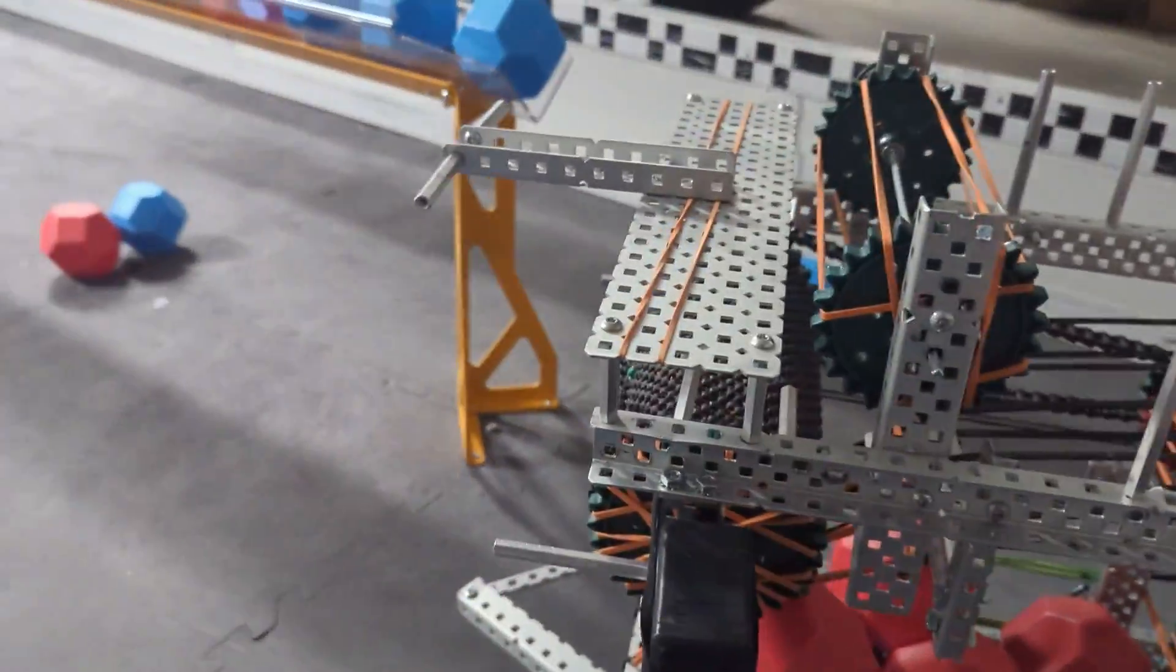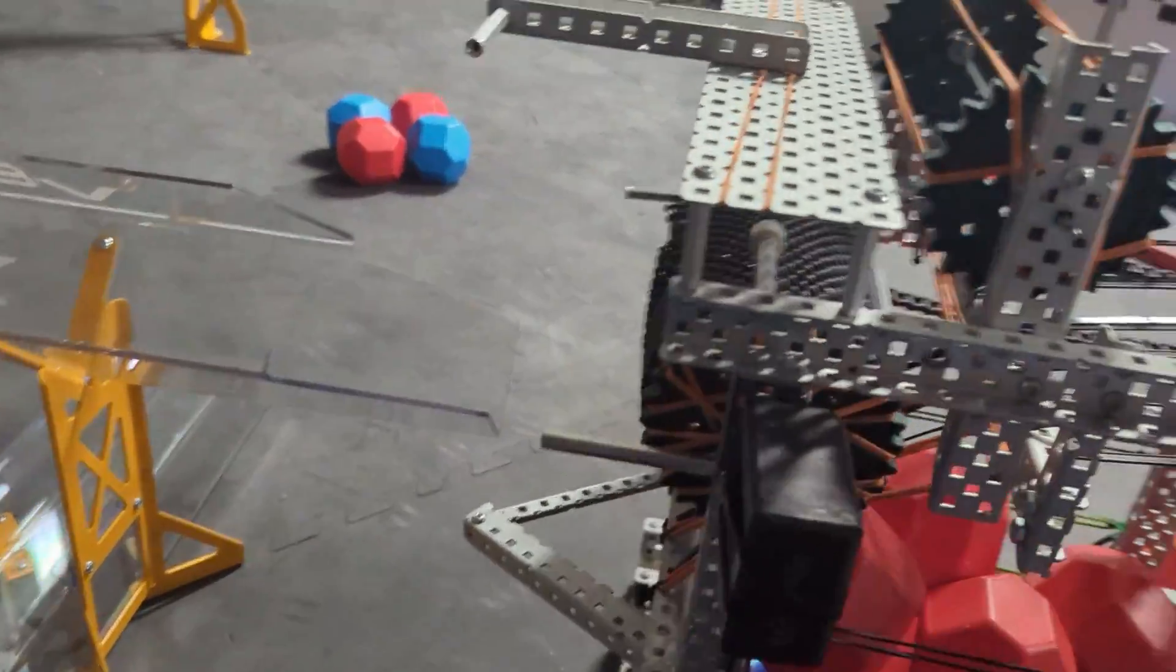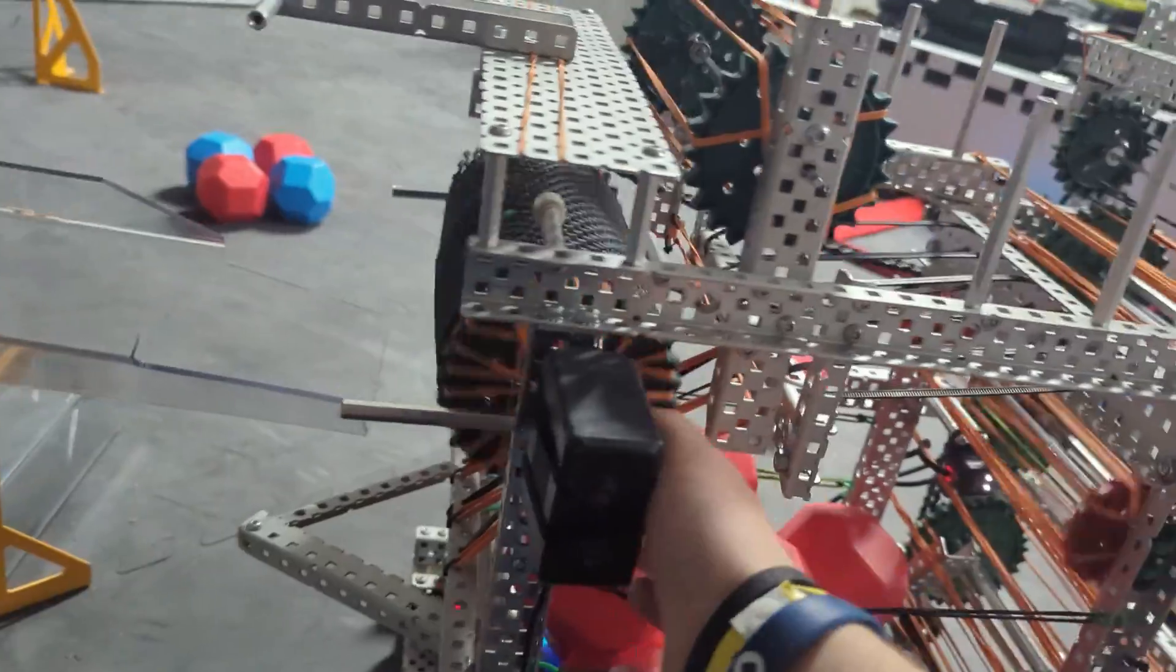Now, coming over here to the middle goals, this, it can also score in here. This is the part I really like. This roller right here is the secret to that.